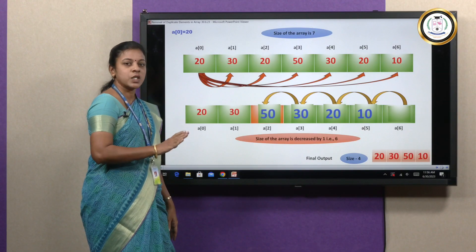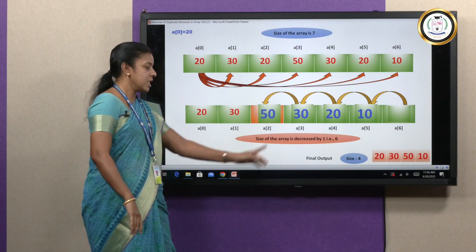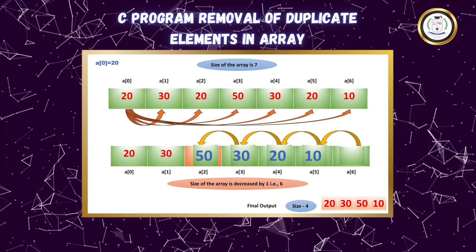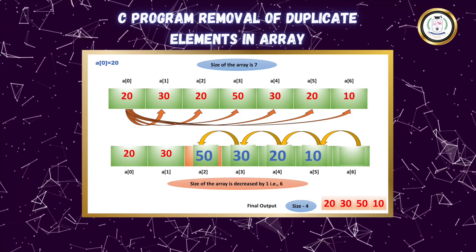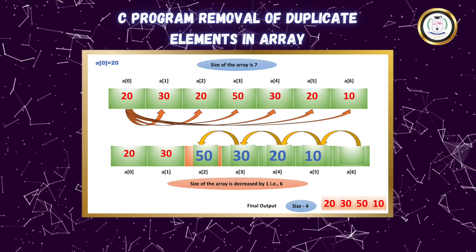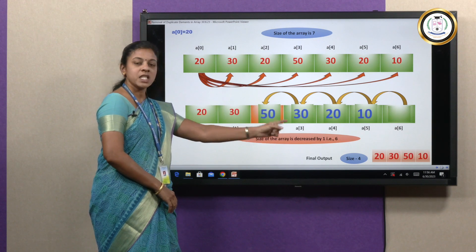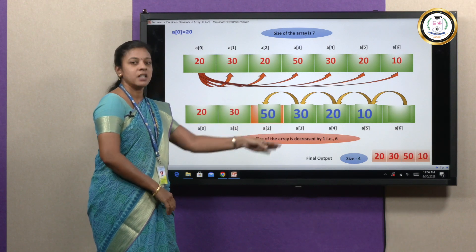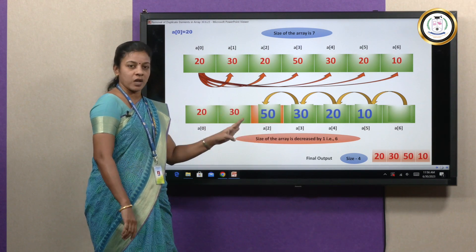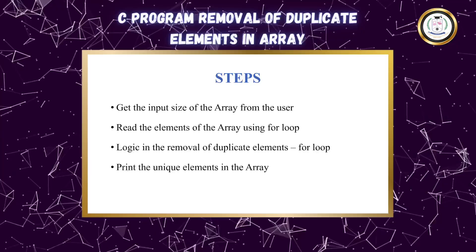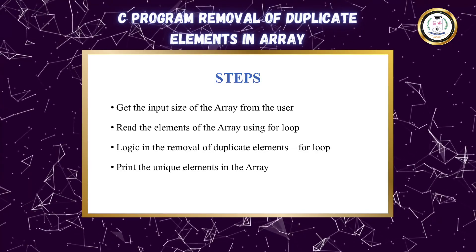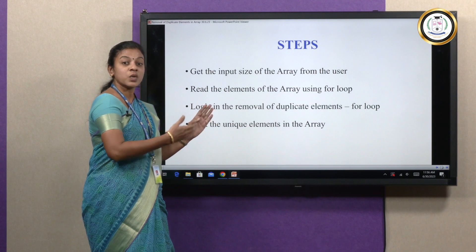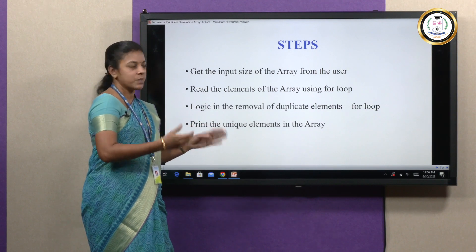There should not be any duplicate elements. For this input, the final output will be an array of size 4, with elements 20, 30, 50, 10. These four are the unique elements. We will now see this in more detail because we are going to write a C program.